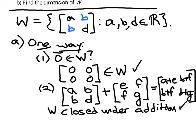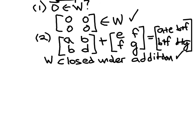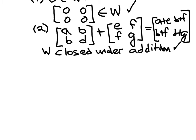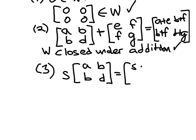And so the last thing to show is that W is closed under scalar multiplication. So if we take just any number S times some matrix that belongs to W, so it has this form here, and perform that scalar multiplication—S times A, S times B, S times B, S times D—we do still have a symmetric 2 by 2 matrix, so W is closed under scalar multiplication.